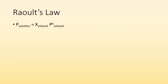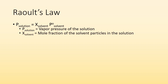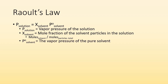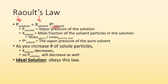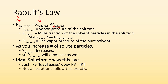Mathematically, Raoult's Law gives us: P_solution = X_solvent × P°_solvent. P_solution is the vapor pressure of the solution. X_solvent is the mole fraction of the solvent particles — moles of solvent divided by total moles of all particles. P°_solvent is the vapor pressure of the pure solvent. As you increase the number of solute particles, the mole fraction decreases, so the vapor pressure of the solution decreases. Ideal solutions obey this law, just like ideal gases obey PV = nRT.